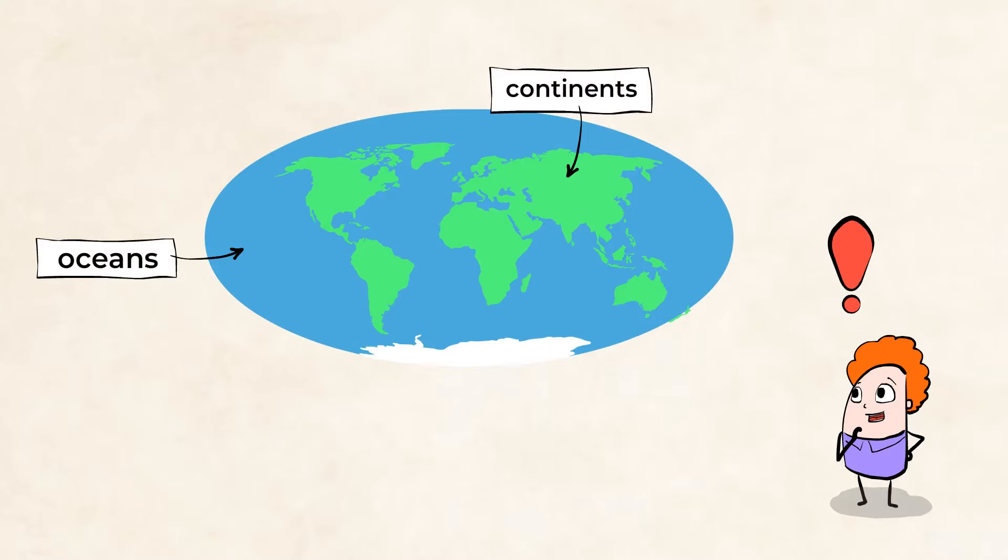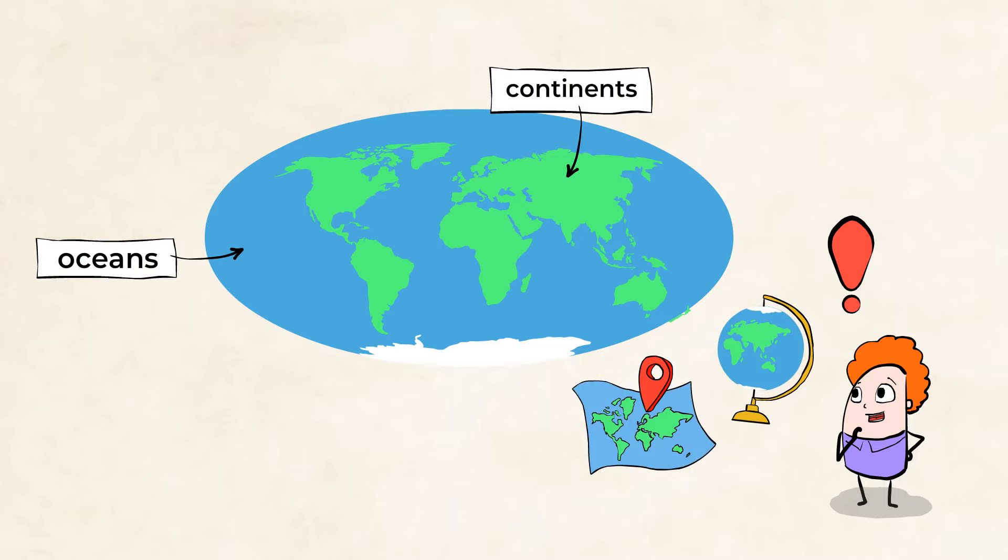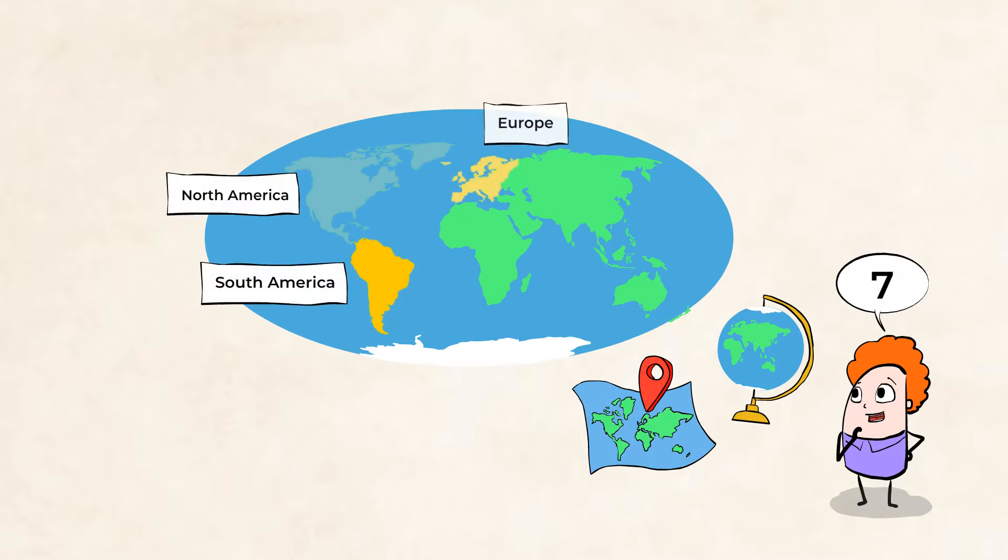The largest landforms are oceans and continents. Continents are the land parts of our Earth. When you look at a globe or map, the continents are the green parts, and the oceans are the blue parts. There are seven continents on Earth.